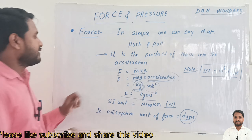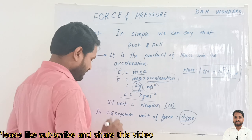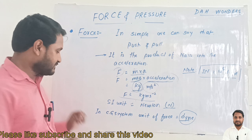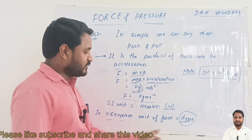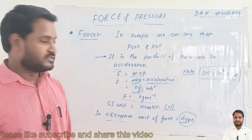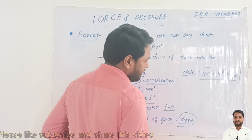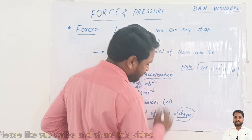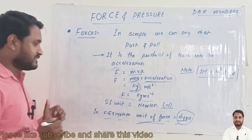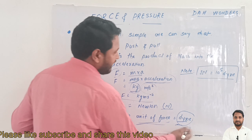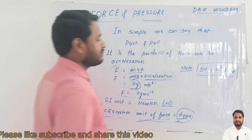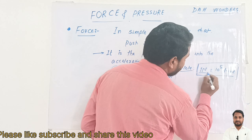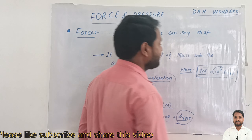Force is denoted by capital F. In the CGS system (centimeter-gram-second system), the unit of force is dyne. In any competition exam, if asked what is the unit of force in the CGS system, the answer is dyne. Note: 1 Newton equals 10 to the power 5 dyne.